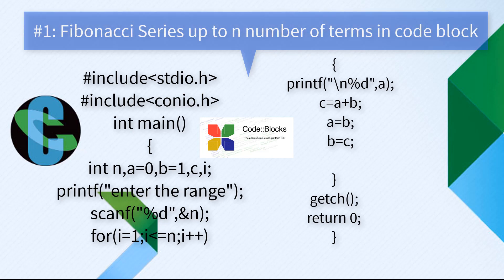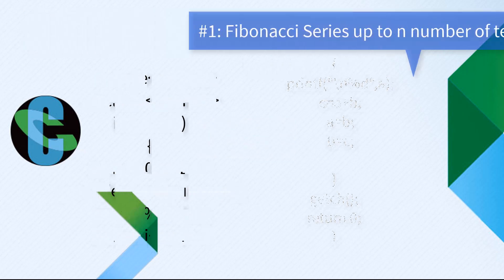Here you can see: for i equal to 1, and i is less than or equal to n, and i++. After that, when you go into the for loop, print out all the series using printf. The important part is C equal to A plus B, then A equal to B, and B equal to C. And at the last, you have getch and return 0.